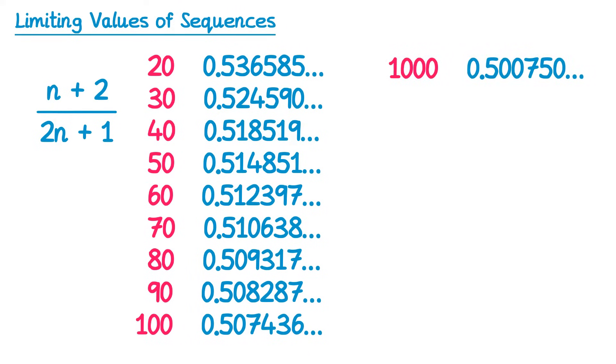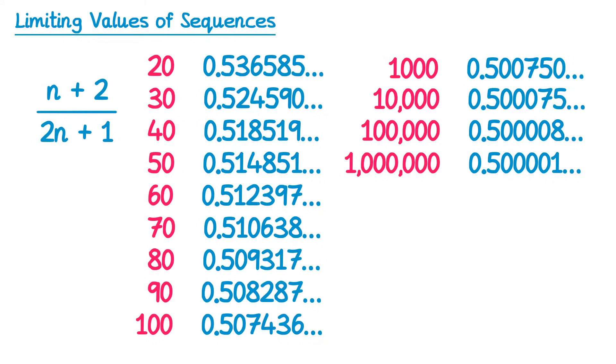And then we can go further, the 1,000th, 10,000th, 100,000th, the millionth term, and even the billionth term. What you can see here is that as we make n very very large, the sequence gets very very close to 0.5.